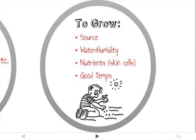There are several things that biological contaminants need to grow indoors: a source, water or humidity, nutrients like skin cells, and favorable temperatures. These are often the result of inadequate prevention and maintenance. Try to avoid specifying furnishings that will collect dust, especially if they cannot be washed with hot water.